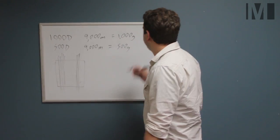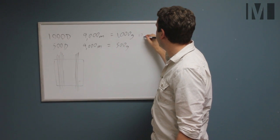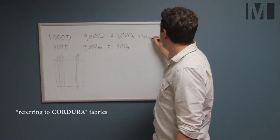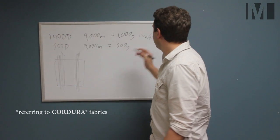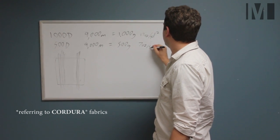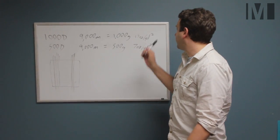So what is the weight savings? Well, 1000D weighs about 10 ounces per yard squared of the finished fabric. And 500D weighs about 7 ounces per yard squared.